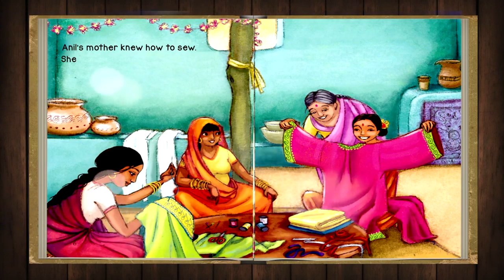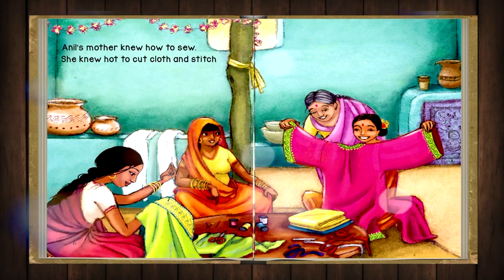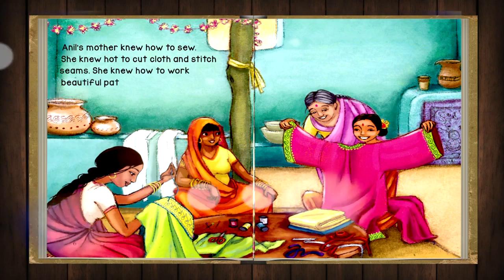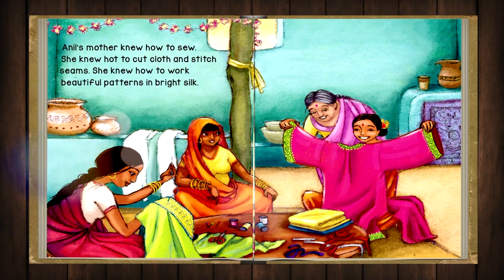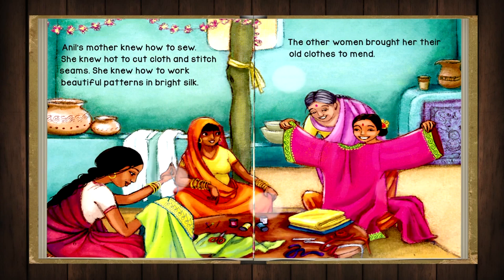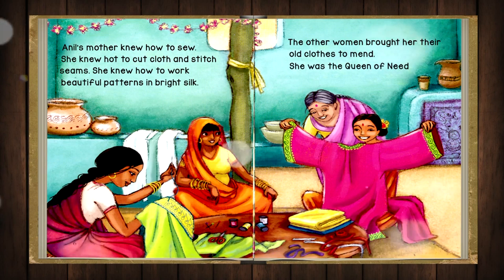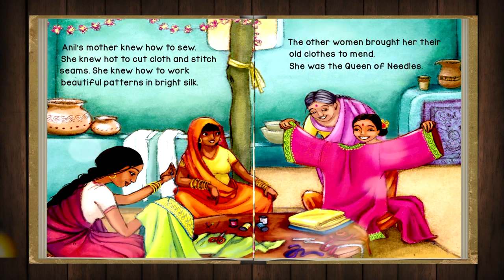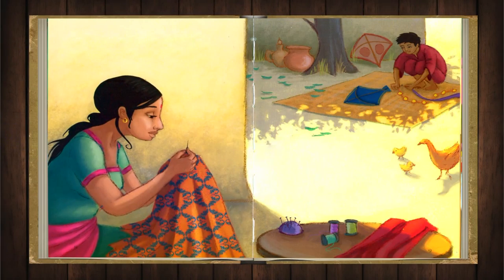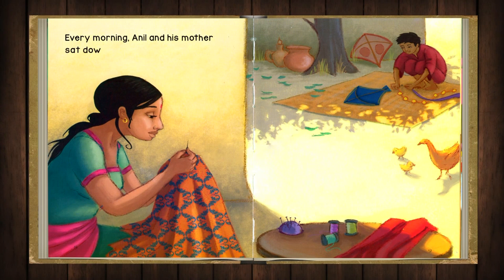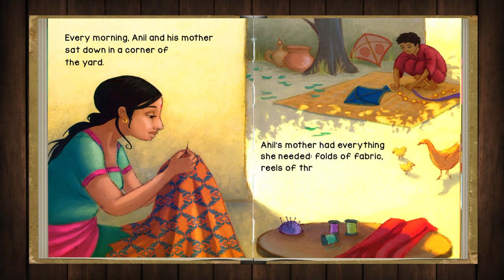Anil's mother knew how to sew. She knew how to cut cloth and stitch seams. She knew how to work beautiful patterns in bright silk. The other women brought her their old clothes to mend. She was the queen of needles. Every morning, Anil and his mother sat down in the corner of the yard. Anil's mother had everything she needed — folds of fabric, reels of thread and a pot of shiny new pins. She set to work and soon her needles flew.